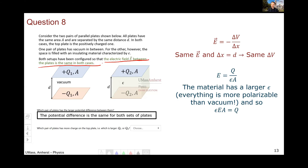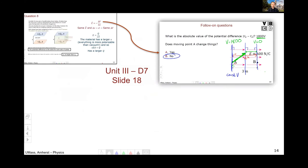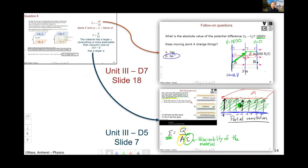In terms of the charge, I would think about the relationship for the electric field between two plates. The material has a larger epsilon because everything is more polarizable than vacuum. Rearranging, we get epsilon E A equals Q. Since the material has a bigger epsilon and E and A are the same, the one with the material will have the larger charge. The first part of this problem was unit three, day seven, slide 18, where we thought about the relationship between electric field and electric potential. And then this second bit was very similar to what was covered on unit three, day five, slide seven, where we thought about how the electric field and the charge on the plates were related when I added a material.